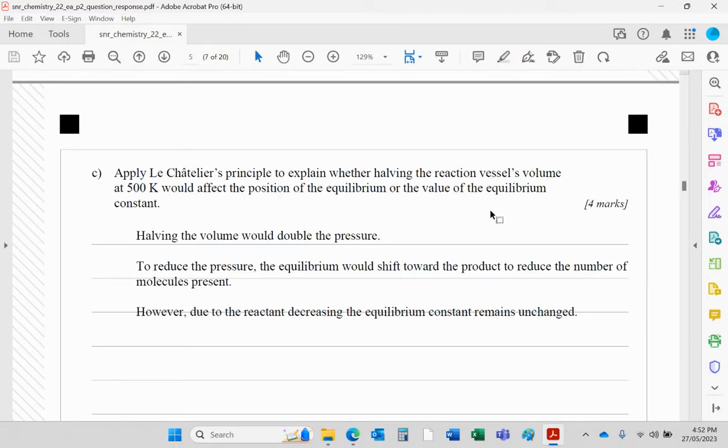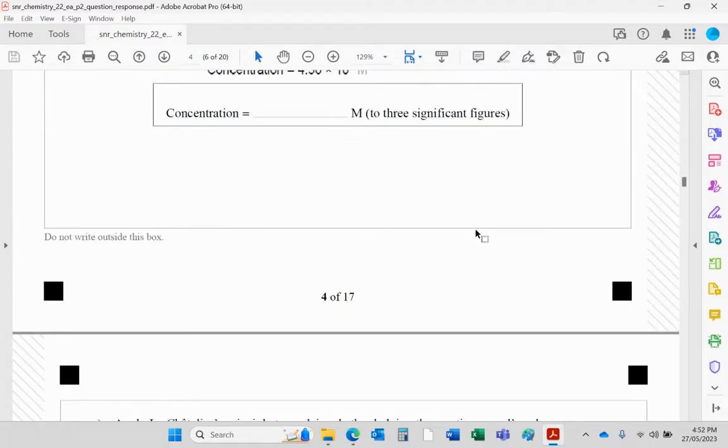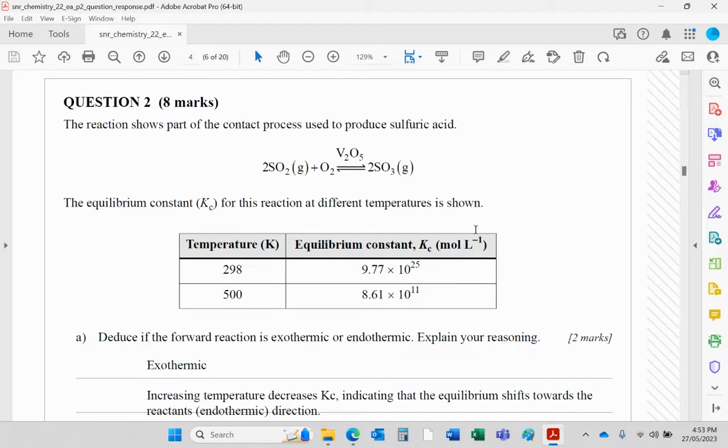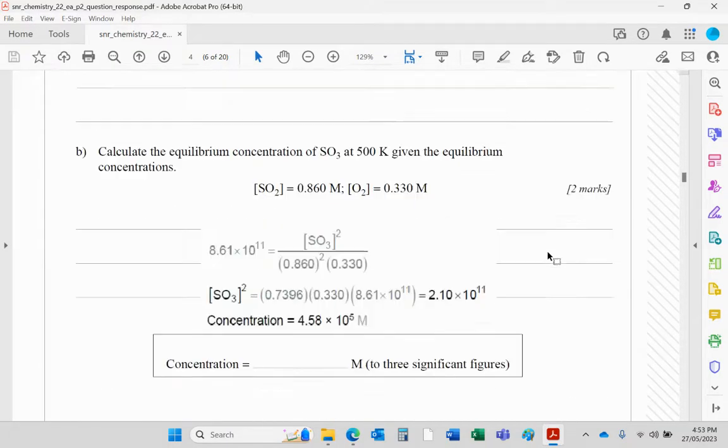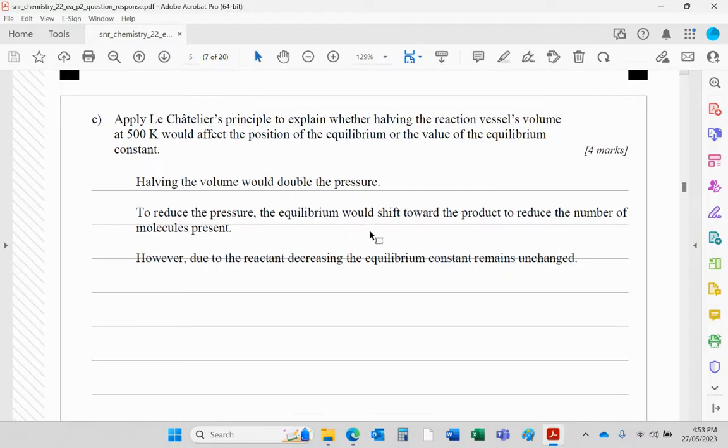Apply Le Chatelier to explain whether halving the volume would affect the position of equilibrium or the value of the equilibrium constant. If you halve the reaction's volume, you're effectively increasing the pressure—effectively doubling the pressure. If you double the pressure, then effectively the system will oppose that and shift to the right where there's less gas, therefore reducing the pressure, opposing the effect. So it shifts to the product to reduce the number of molecules. But the equilibrium constant is not changed. The only thing that can change the equilibrium constant is temperature. Nothing else can change K.